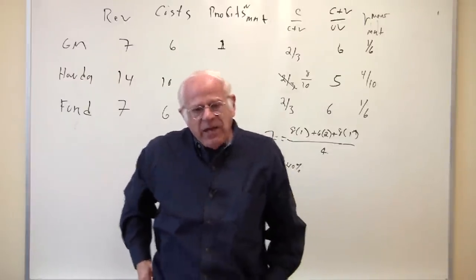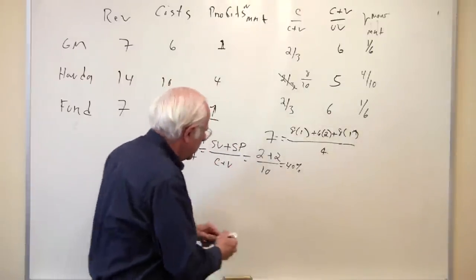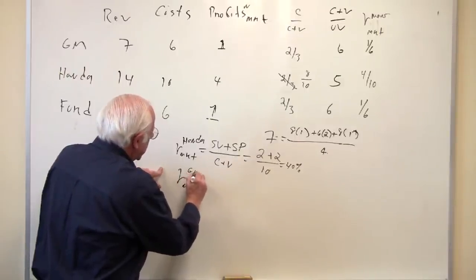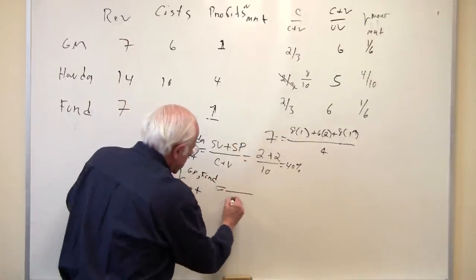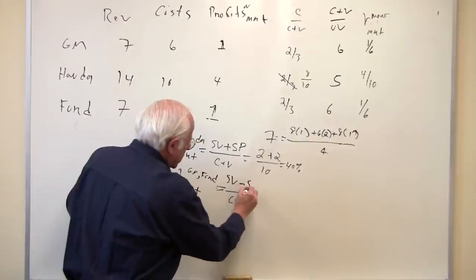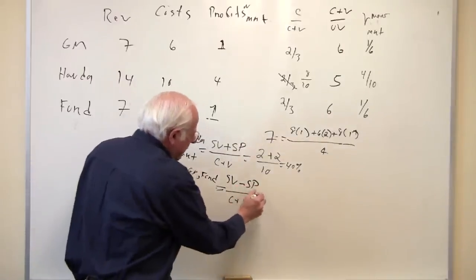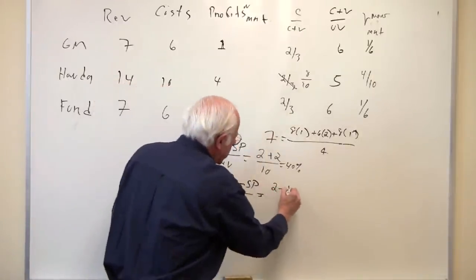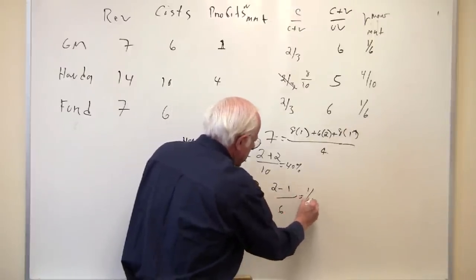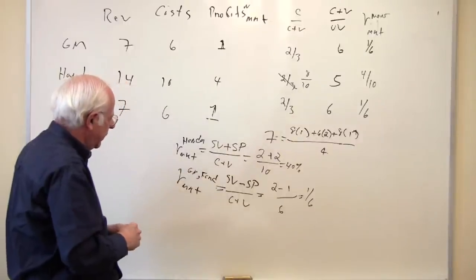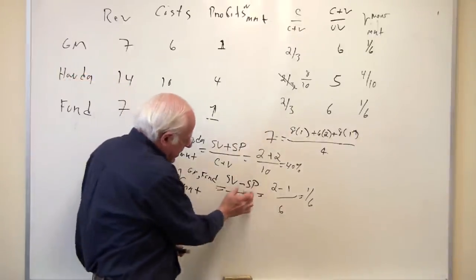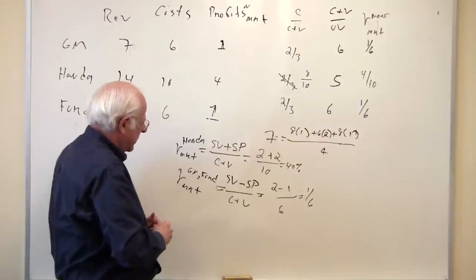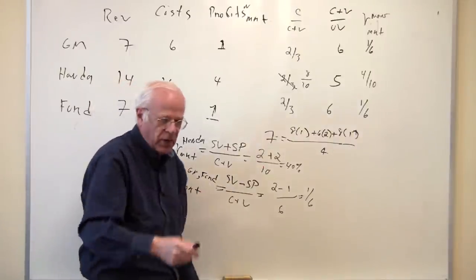So the gain for Honda, maybe I should write this down here, the gain from Honda, this is either GM or Ford, is their loss because they are losing the same amount of super profit. So their rate of profit has gone down. It was 2, it's gone down now to 1 over the C plus V of 6, so it's 1/6. So the rate of profit for GM and Ford is gone down because they lose this surplus, this super profit which is gained by Honda. And Honda gains the 2 because both GM and Ford lose a dollar each.